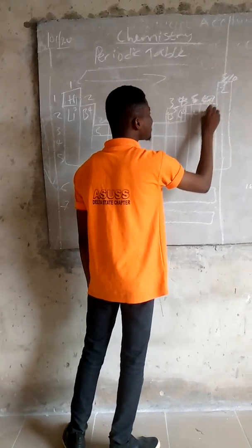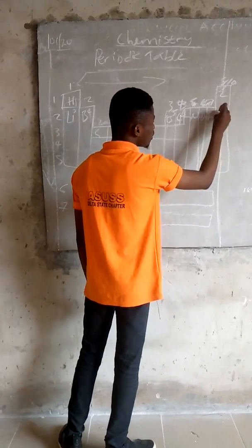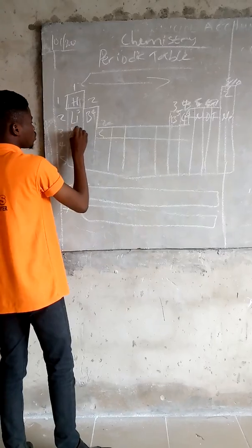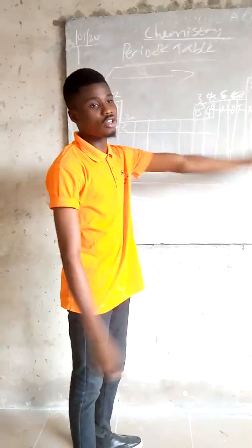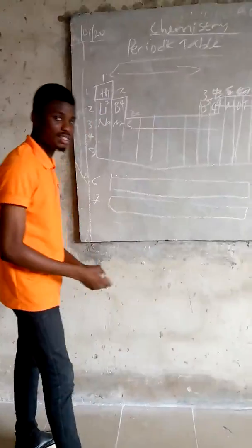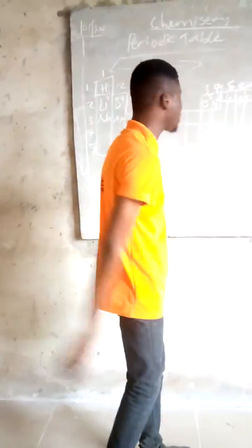Nitrogen, oxygen, fluorine, neon, and sodium, magnesium. All these are arranged according to increasing atomic mass and also increasing atomic number.